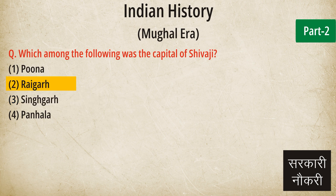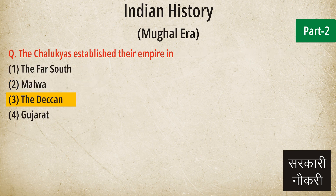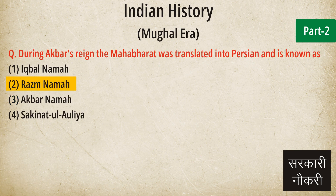Question: Which among the following was the capital of Shivaji? Answer: Raigad. Question: Which Sultan of Delhi established an employment bureau, a charity bureau and a charitable hospital? Answer: Firoz Tughlaq. Question: The Chalukyas established their empire in. Answer: The Deccan. Question: During Akbar's reign the Mahabharata was translated into Persian and is known as. Answer: Razmnama.